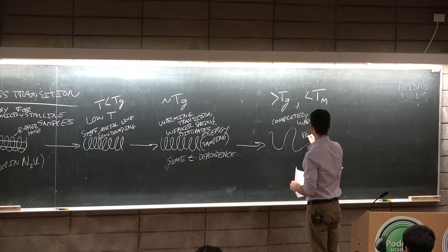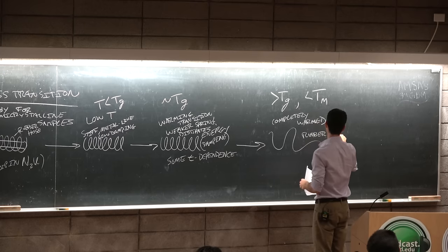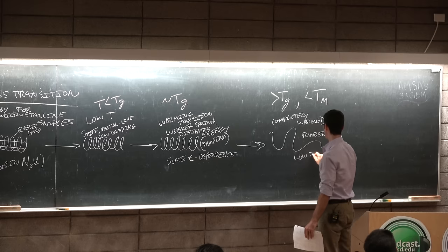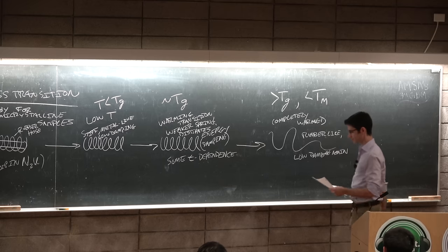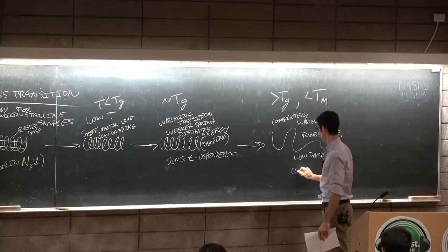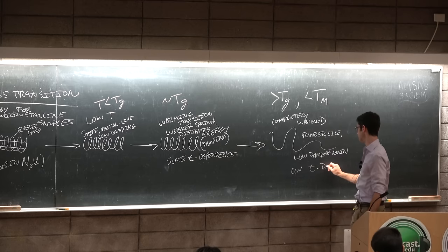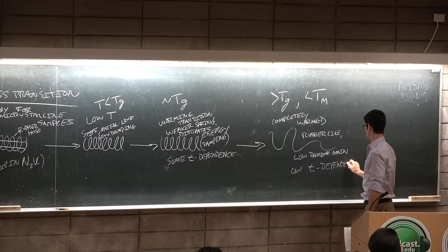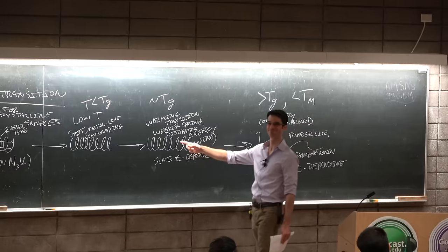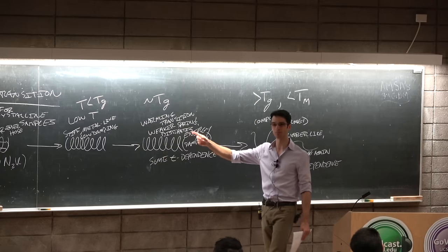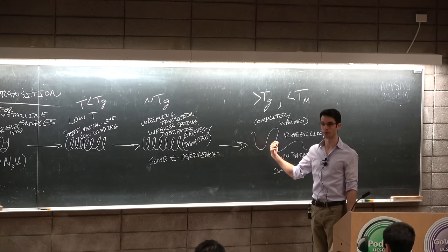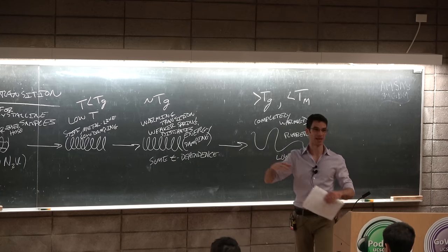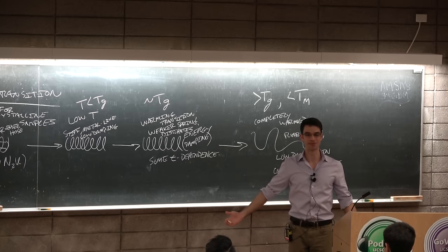And what we have now is that it's completely warmed and it's rubber-like. Now we have low damping again and now a low time dependence again. Because now all the springiness of the spring, all of the behavior of the spring is now being controlled by the molecular mechanisms in the rubber itself. And this is now in the state where we have just a rubber band. And if you've all seen my video on rubber bands and entropic elasticity, it's the same mechanism.